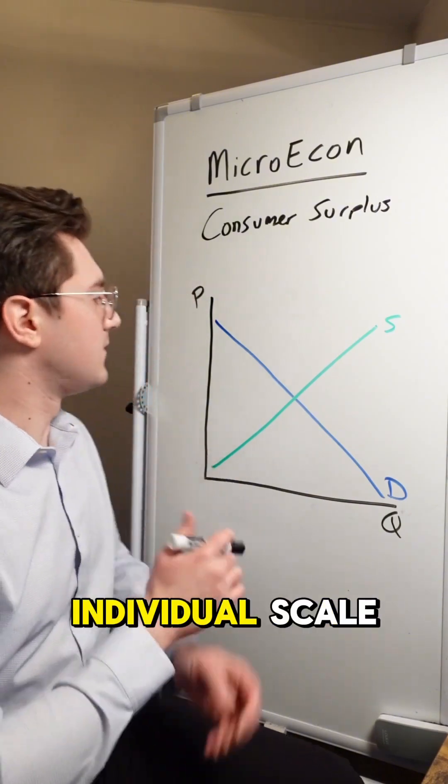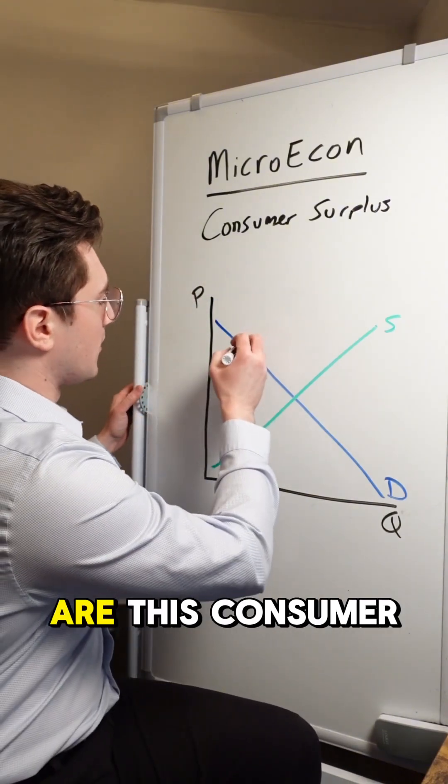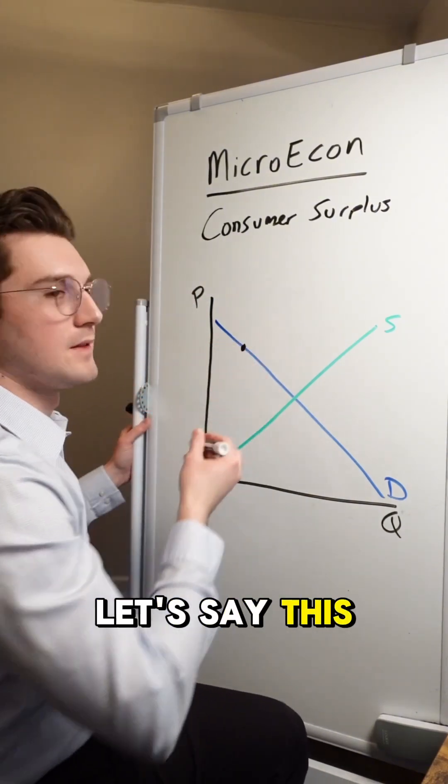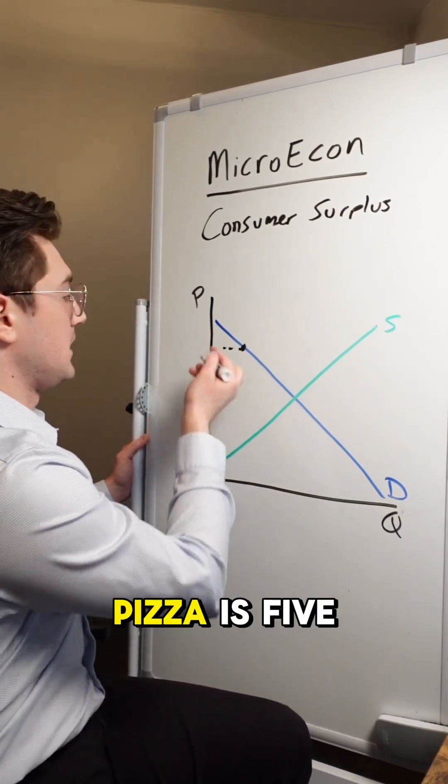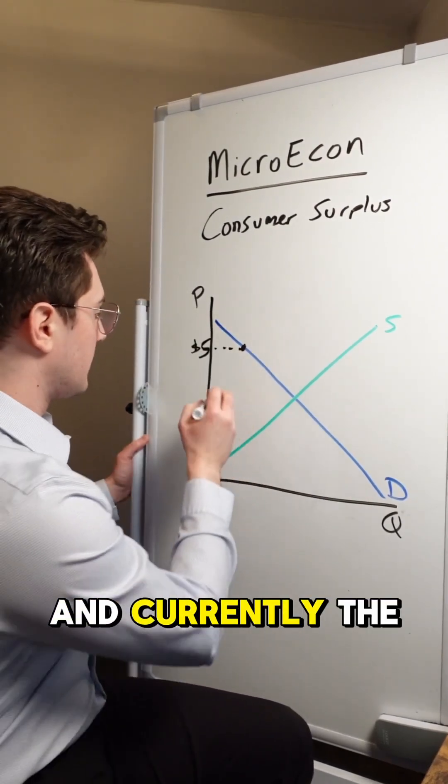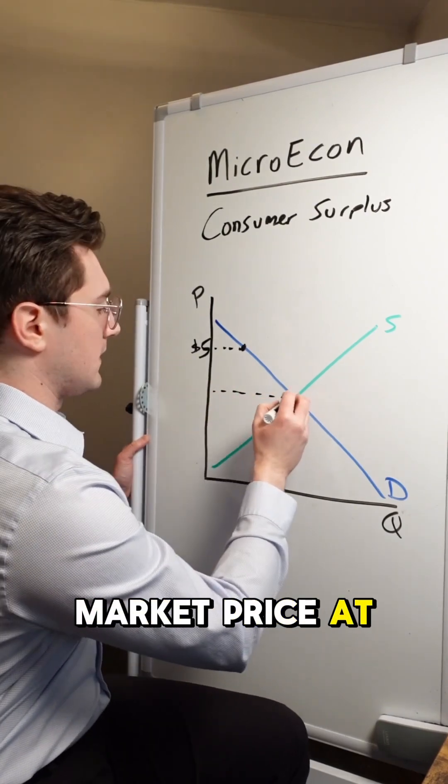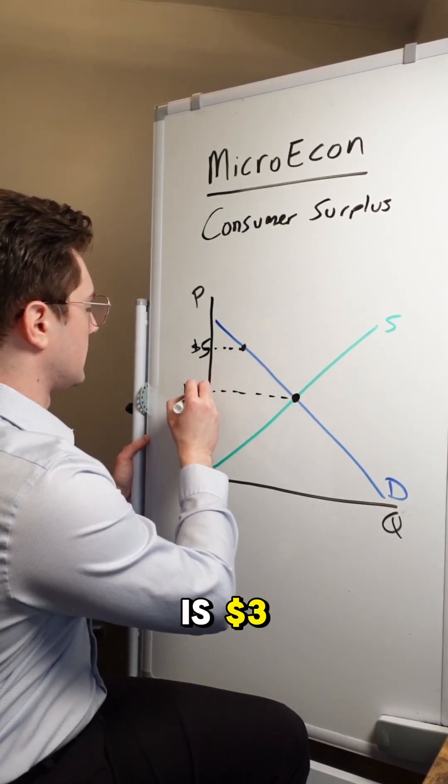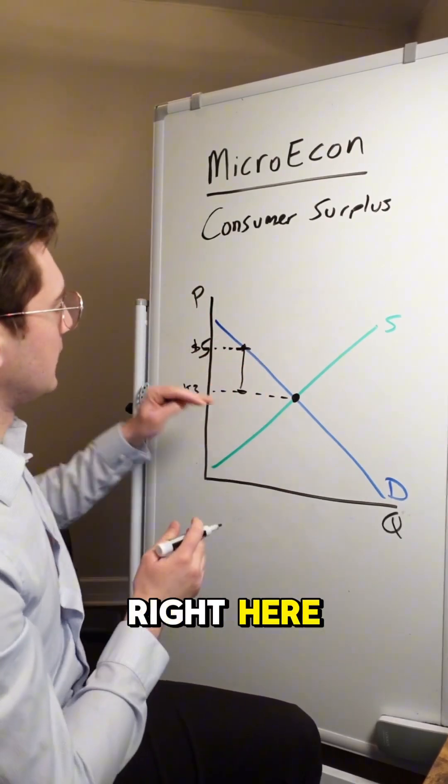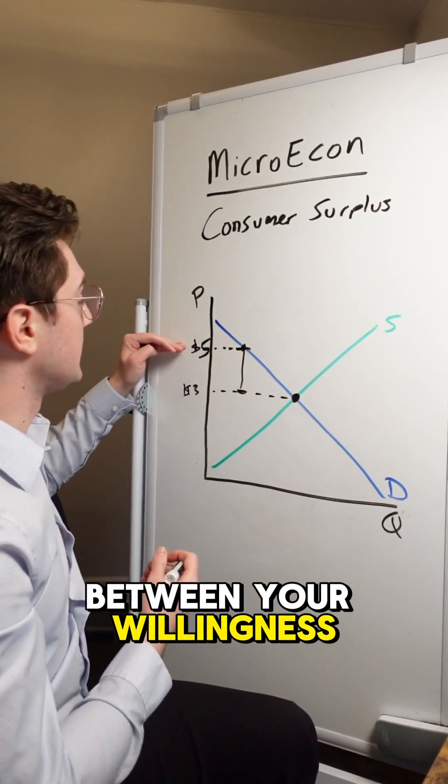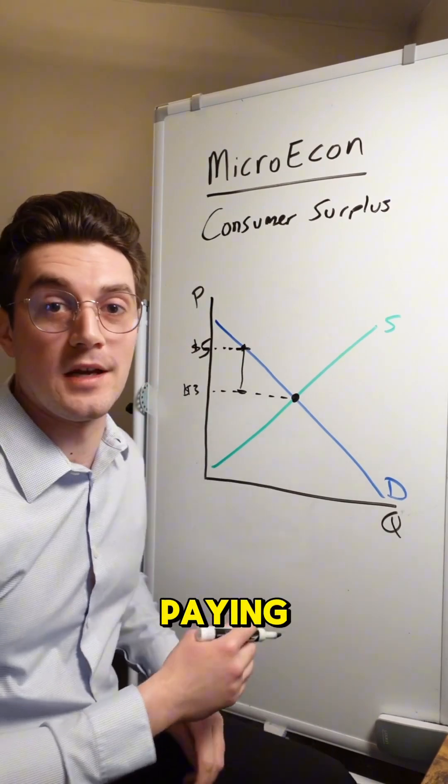All right, so let's start here on an individual scale. Imagine that you are this consumer right here. Let's say this is the market for a slice of pizza and your willingness to pay for a slice of pizza is five bucks here. And currently the market price at this equilibrium point is $3. We can visualize your individual consumer surplus right here. It's this height right here and the difference between your willingness to pay and the price that you're actually paying.